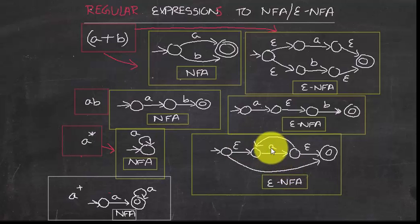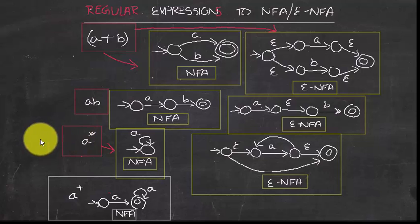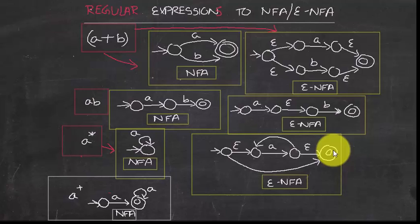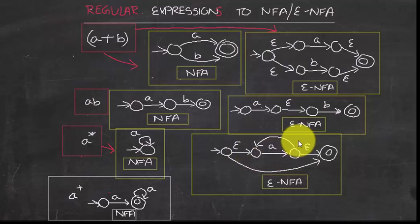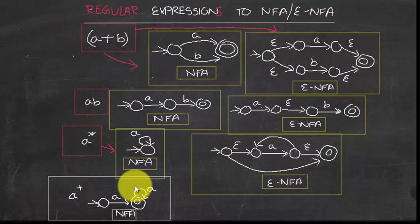There should also be an epsilon transition going back for the looping behavior. Recall that a* means zero or more occurrences, so if no A is consumed the automaton can still reach the accepting state via epsilon. After that it can also move back with an epsilon transition. These are the rules to follow when you encounter a Kleene closure.